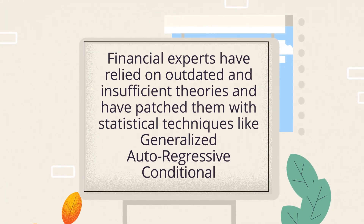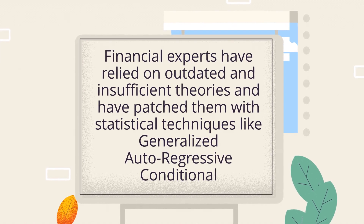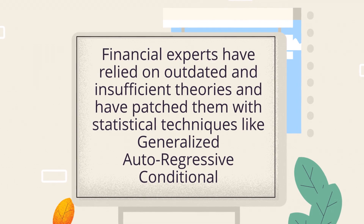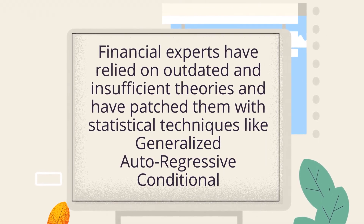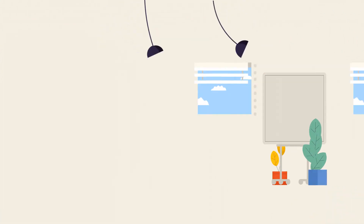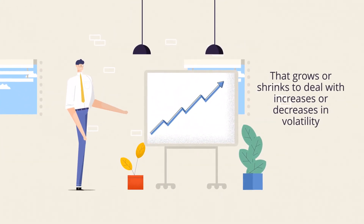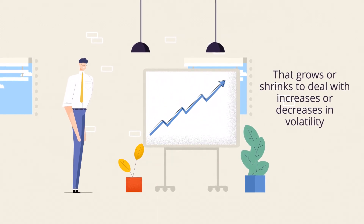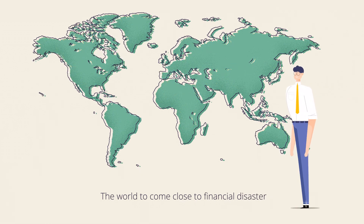Financial experts have relied on outdated and insufficient theories and have patched them with statistical techniques like generalized autoregressive conditional heteroscedasticity, GARCH, instead of using multifractal market analysis. GARCH adjusts parameters to maintain a normal probability curve that grows or shrinks to deal with increases or decreases in volatility. However, these patches are inferior science and have caused the world to come close to financial disaster numerous times in recent decades.